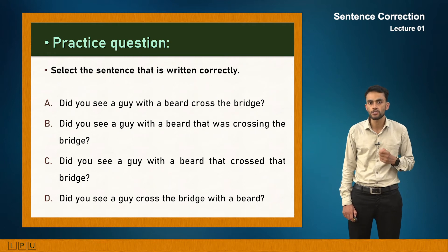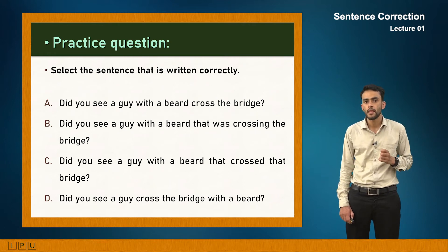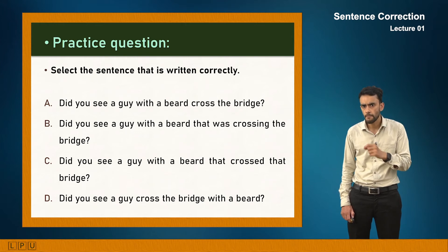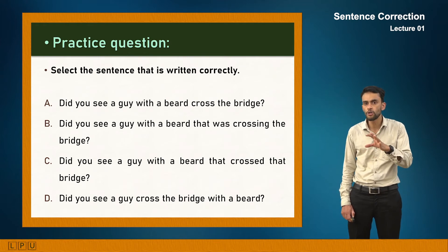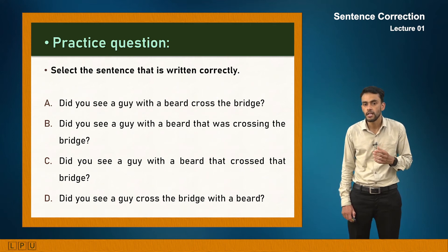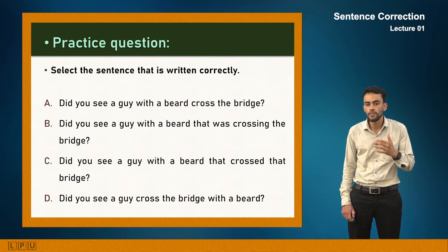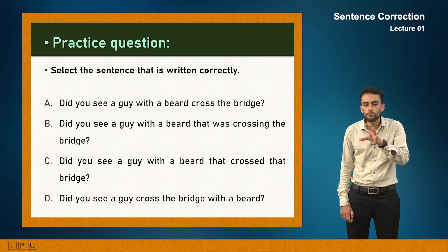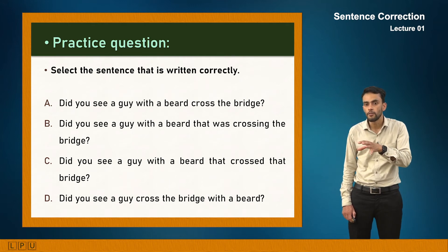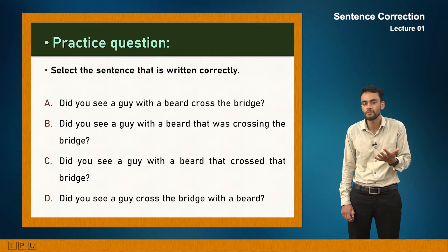Select the sentence written correctly. Option A: 'Did you see a guy with a beard cross the bridge?' Option B uses 'that was crossing the bridge' — wrong, you should say 'who was crossing.' Option C uses 'that crossed the bridge' — also wrong for a person. Option D: 'Did you see a guy cross the bridge with a beard?' — wrong positioning, as 'with a beard' is misplaced after 'bridge.' The correct answer is option A.